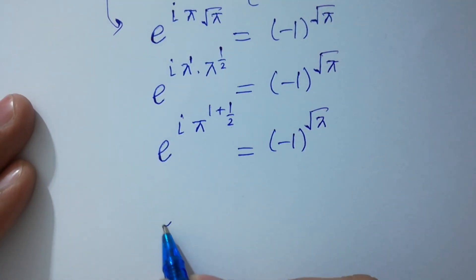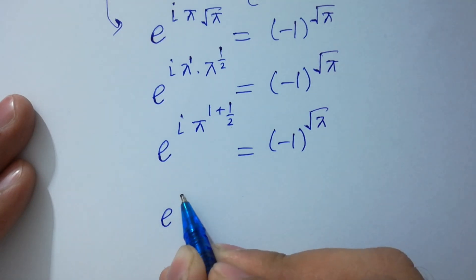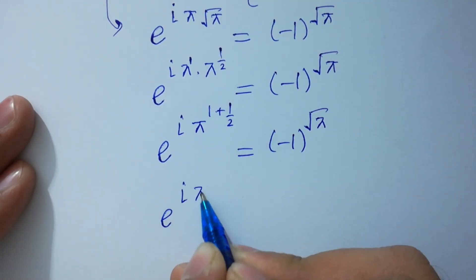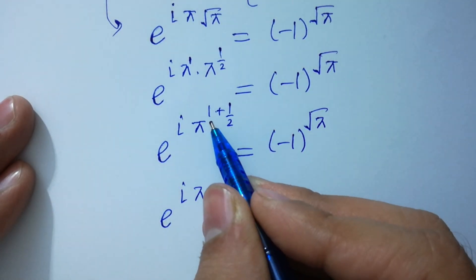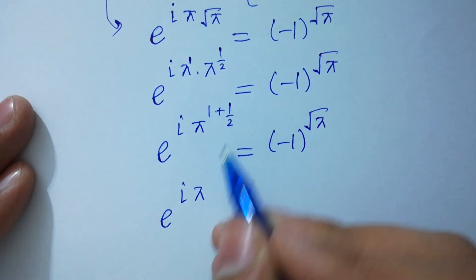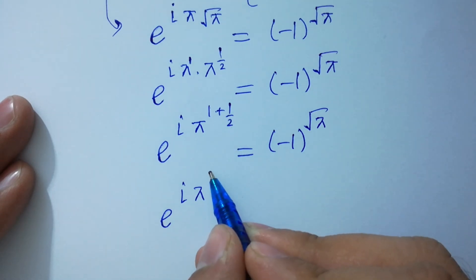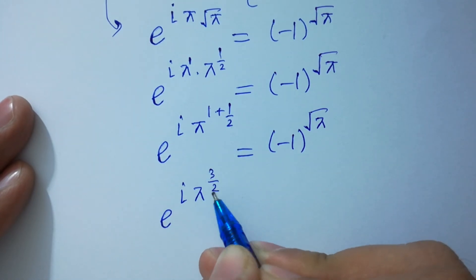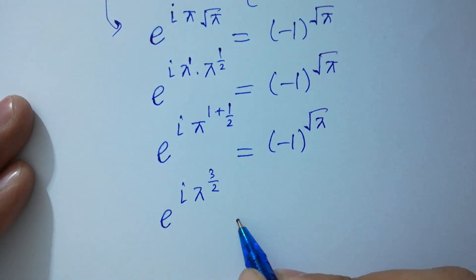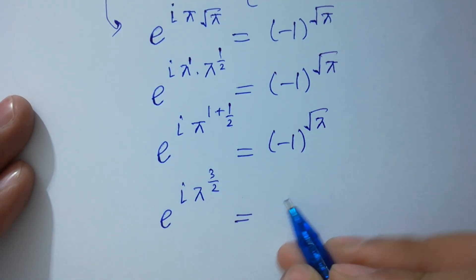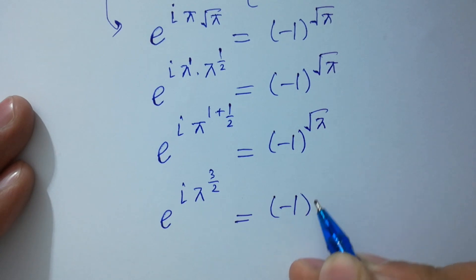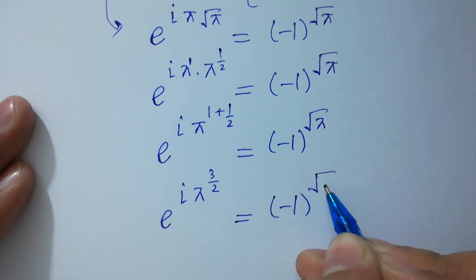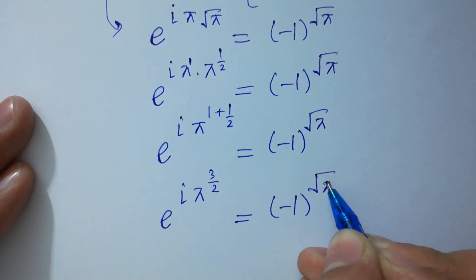So we get e to the power i·pi times (2/2 plus 1/2), which is 3/2, equals minus 1 to the power square root of pi.